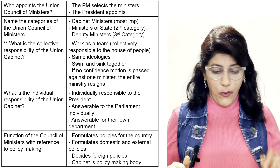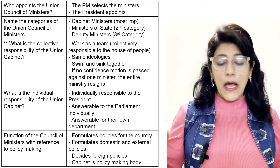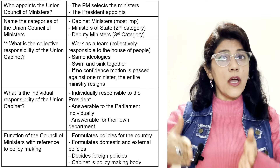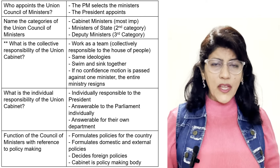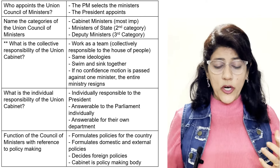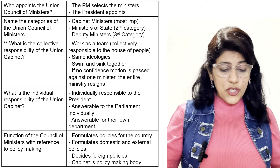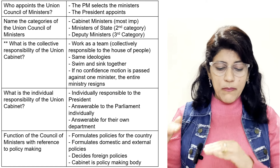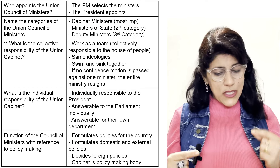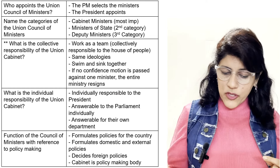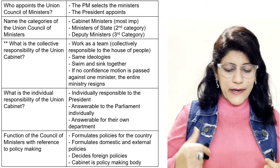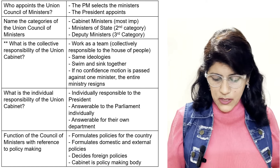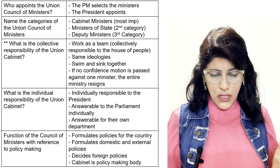Each minister is answerable to the Parliament individually and answerable for their own department. Functions of the Council of Ministers with reference to policy making: formulates policies for the country, formulates domestic and external policies, and foreign policies. The Cabinet is a policy-making body.